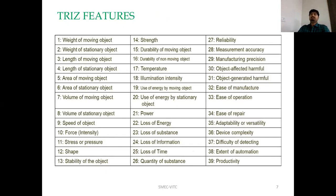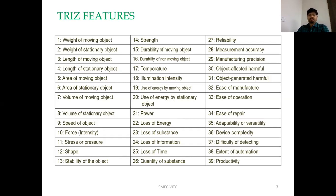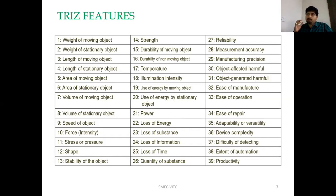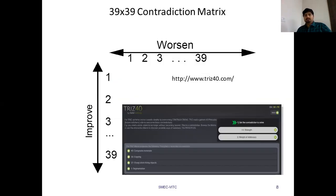Let us look at the TRIZ features. The previous designers and inventors have listed 39 specific features, including: weight of moving object, weight of stationary object, length of moving/stationary object, area, speed, force, pressure, shape, stability, quantity of substance, loss of time, energy, temperature, strength, reliability, ease of manufacture, ease of operation, ease of repair, device complexity, difficulty of detecting, and productivity. Any product you want to develop will encounter these features.